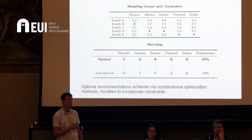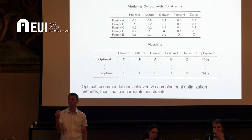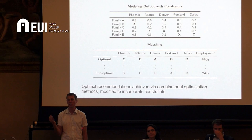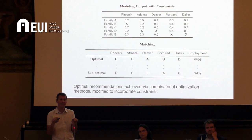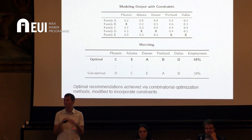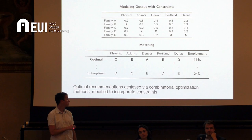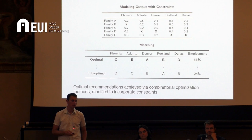Here's a toy example of how this works in practice. Say we have five families — family A through E — coming in. We plug their features into the algorithm and get predicted probabilities: family A might have a 20% chance of finding work in Phoenix but a 50% chance in Atlanta. Some assignments are impossible because of individual constraints. The placement officer is tasked with finding the optimal allocation — with five families and five locations, there are a huge number of ways to assign them, making it impossible to figure out the optimal allocation by trial and error. The algorithm identifies that sending family C to Phoenix and family E to Atlanta, and so on, yields a 44% expected employment rate, rather than the most suboptimal allocation yielding only 24%.